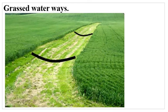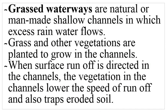Grassed waterways: you can see the area highlighted with black lines — that is a channel in which water passes, and this channel has grass. Whenever surface runoff uses the channel, soil particles are filtered out and the speed of surface runoff is lowered, so soil is not carried away. These are natural or man-made shallow channels in which excess rainwater flows. Grass and other vegetation in the channels lower the speed of runoff and also trap eroded soil. So grassed waterways work in two ways: lowering the speed of surface runoff and trapping eroded soil particles.